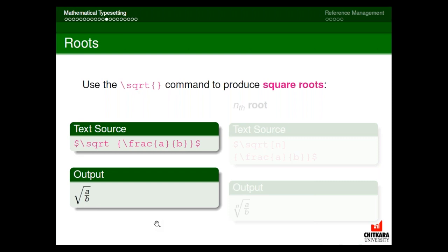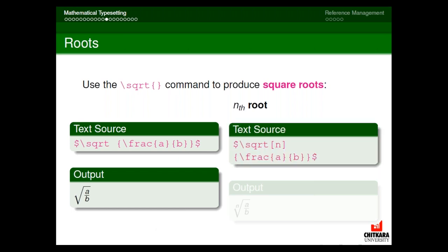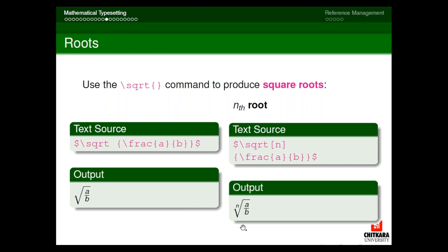We also have a command for nth root. To calculate the nth root, again use backslash sqrt but the option n is written in square brackets before the curly braces: backslash sqrt[n]{expression}. The n specifies which root to calculate, and the expression inside curly braces appears within the square root symbol.